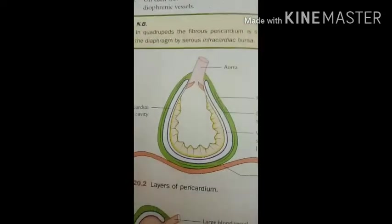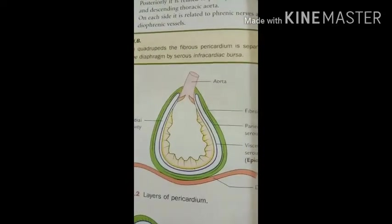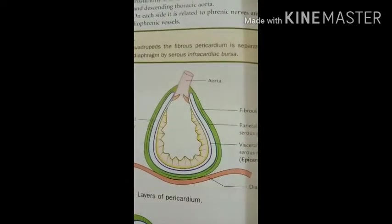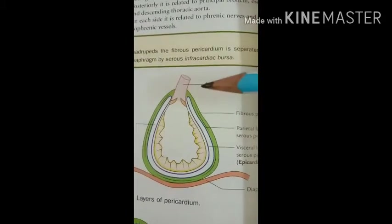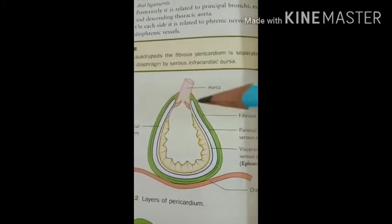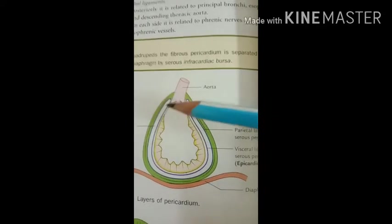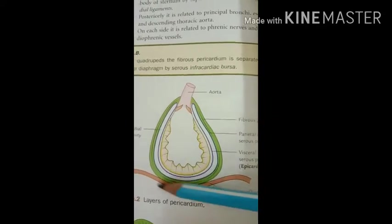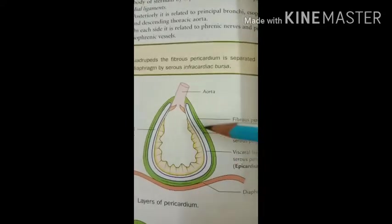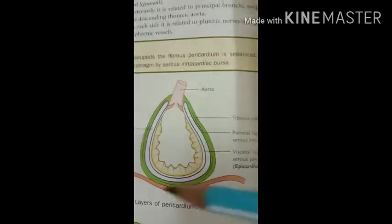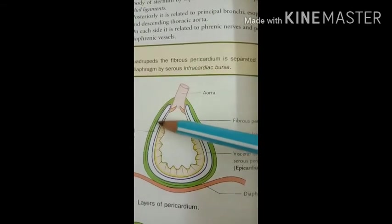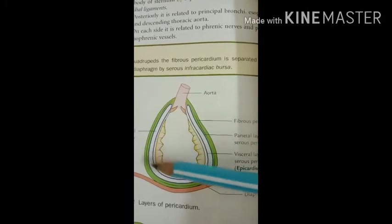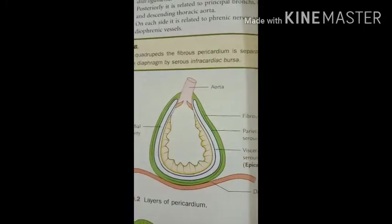The pericardium is divided into two parts: the fibrous pericardium and the serous pericardium. On the outer side you can see the green-colored covering — that is the fibrous pericardium. On the inner side, the blue-colored two layers are the serous pericardium.